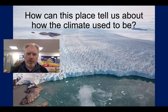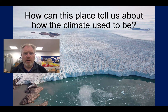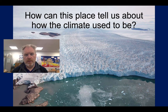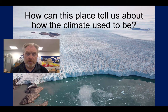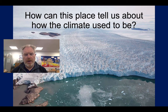I thought I'd start with this photograph of an Antarctic ice sheet, and with the slightly odd question: how can this place tell us how the climate used to be, and how can it tell us about the climate in other places?